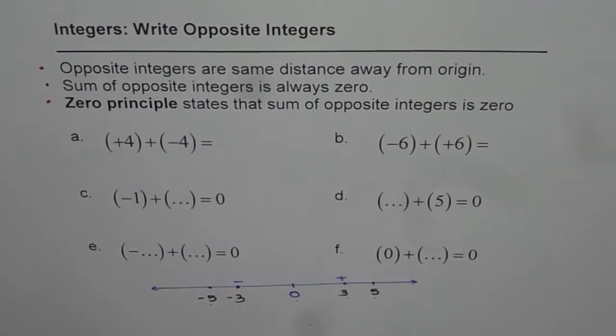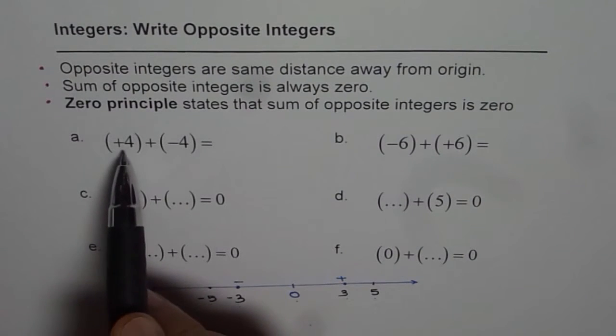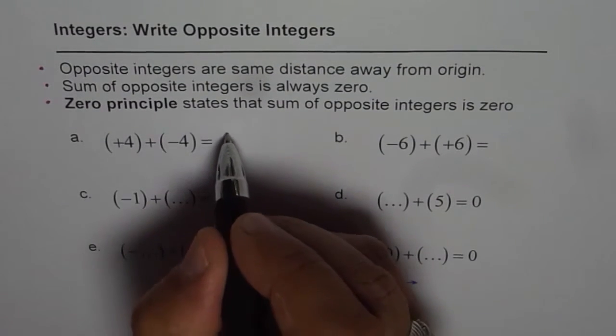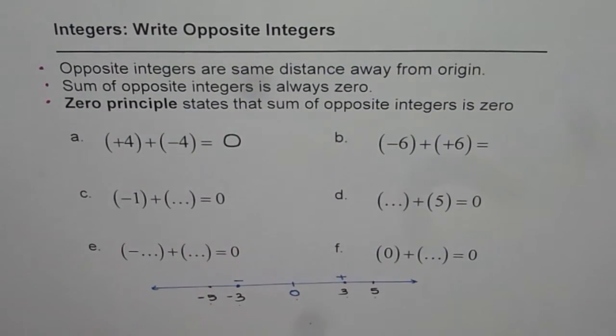Now with that in mind, let us answer the questions. First one is plus 4 plus minus 4 equals to what? Plus 4 and minus 4 are opposite integers. When you add them you should get 0. That's right. So 0 is the answer for this question.